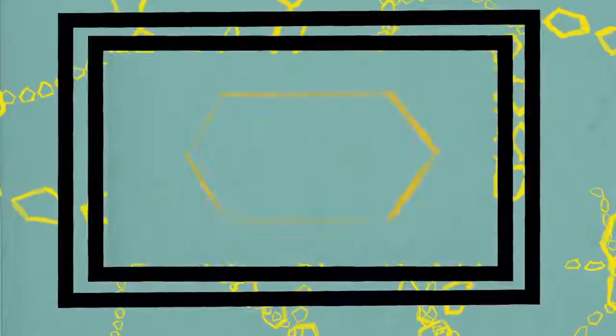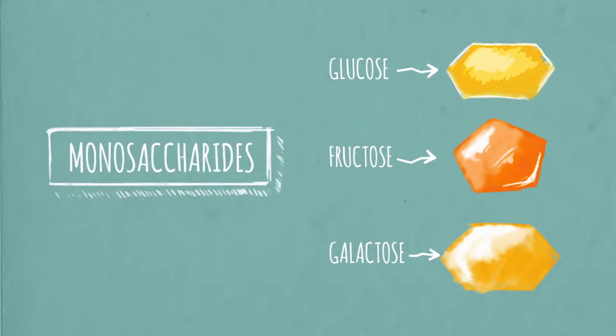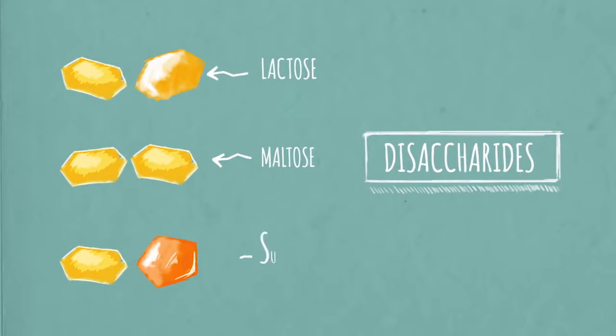This is a simple sugar, or monosaccharide. Glucose, fructose, and galactose are all simple sugars. Link two of them together, and you've got a disaccharide: lactose, maltose, or sucrose.